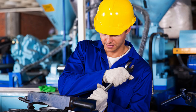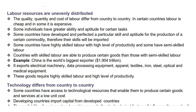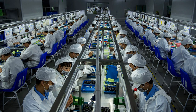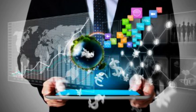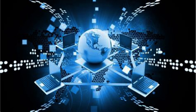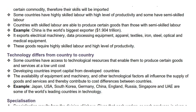The next supply reason is that labor resources are unevenly distributed. The quality, quantity, and cost of labor differ from country to country. In certain countries labor is cheap and in some it is expensive. Some countries have developed and perfected particular skills for the production of certain commodities, so their skills will be imported. Countries with highly skilled labor and high productivity can produce certain goods that those with semi-skilled labor cannot. For example, China is the world's biggest exporter at $1.904 trillion, exporting electrical machinery, data processing equipment, apparel, textiles, iron, steel, and optical and medical equipment — all requiring highly skilled labor.